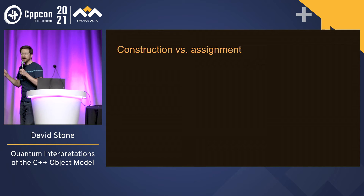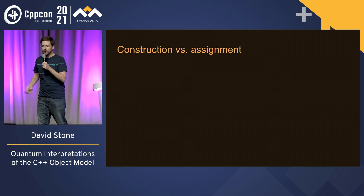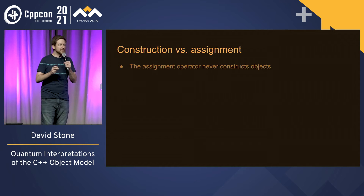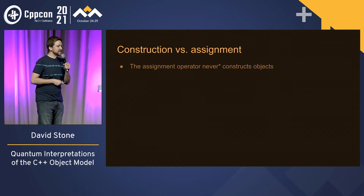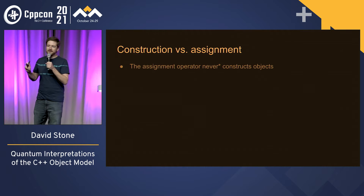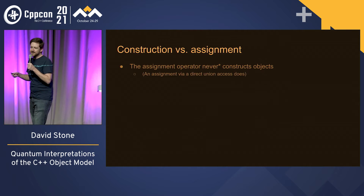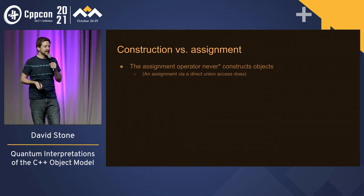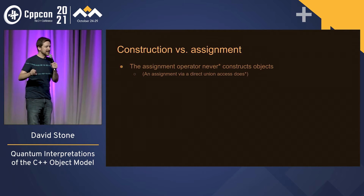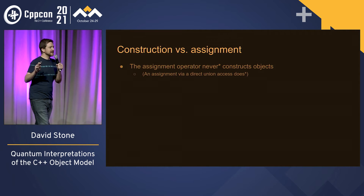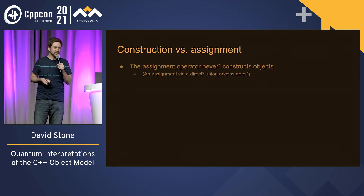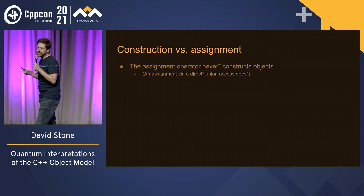Construction versus assignment. In C++, there's a very simple rule you can follow: the assignment operator never constructs objects. Well, not never — you can also use assignment via direct union access. But it doesn't always apply; sometimes there are some restrictions. Let's just move on.